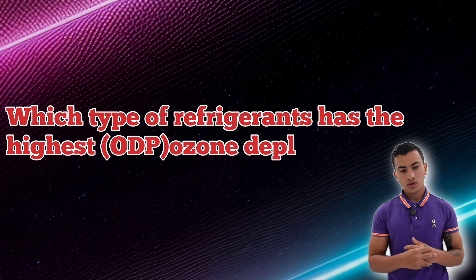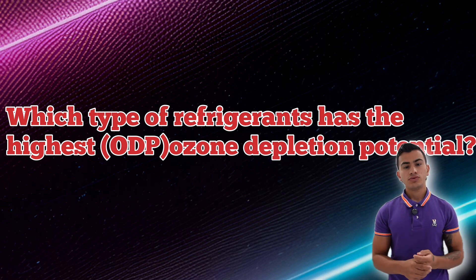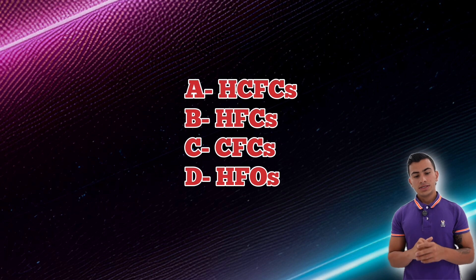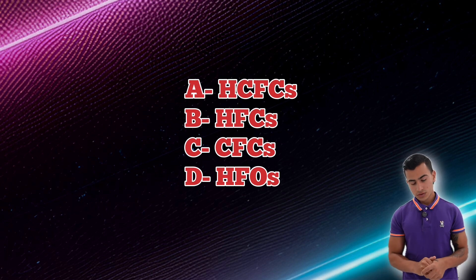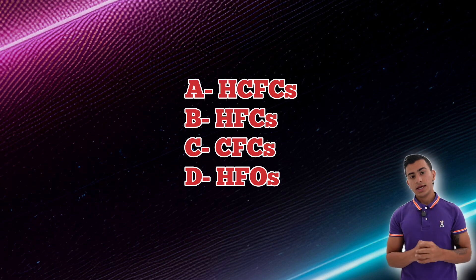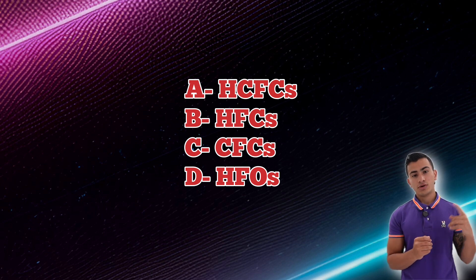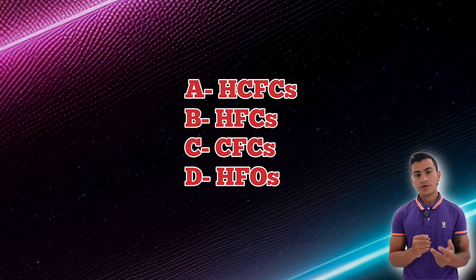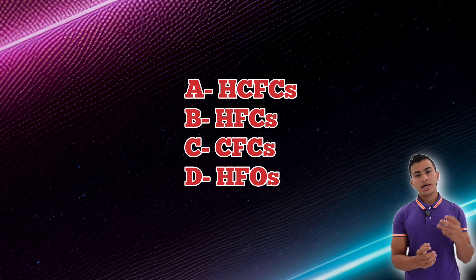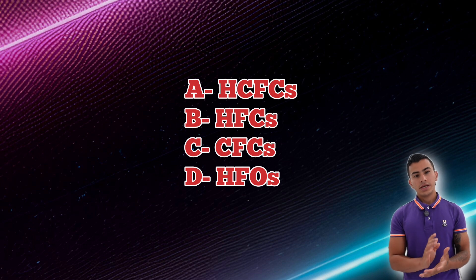Which type of refrigerant has the highest ODP — ozone depletion potential? The options are HCFCs, HFCs, CFCs, and HFOs. The way to remember this: the one that does not have an H but has two Cs stands for chlorine, fluorine, and carbon. HCFCs also have hydrogen, chlorine, fluorine, and carbon, but the hydrogen slows down the chlorine. CFCs have the highest ODP — chlorine, fluorine, and carbon — and that is the answer.